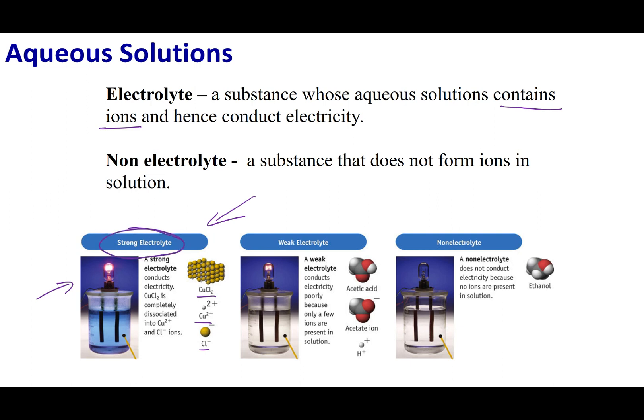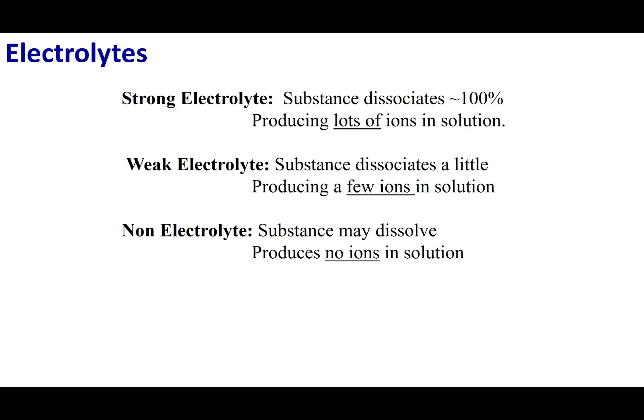Now a strong electrolyte is going to produce a lot of ions in solution. And what you can say is that with a strong electrolyte, I can put the ionic compound in solution and a hundred percent is going to break up. That means every positive and every negative ion is going to be apart and they're going to be surrounded by water molecules. This produces a lot of ions in solution.